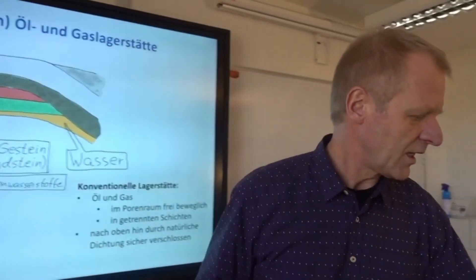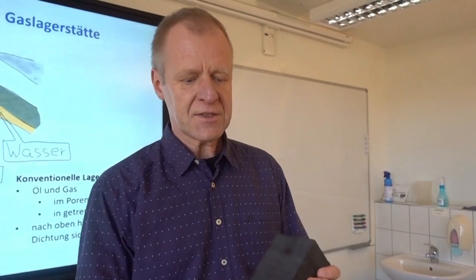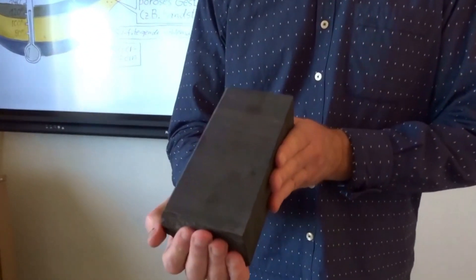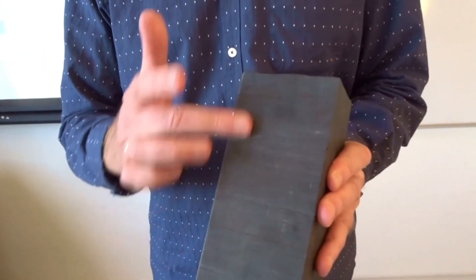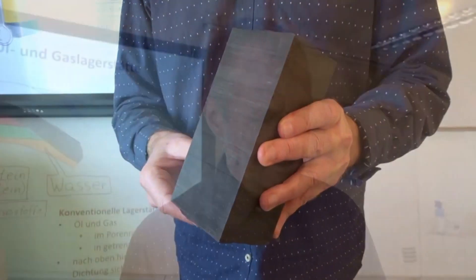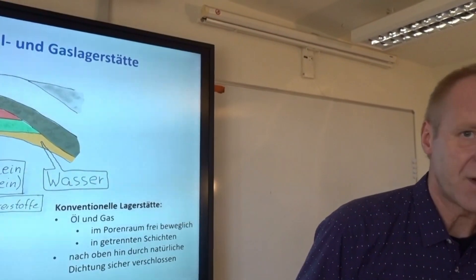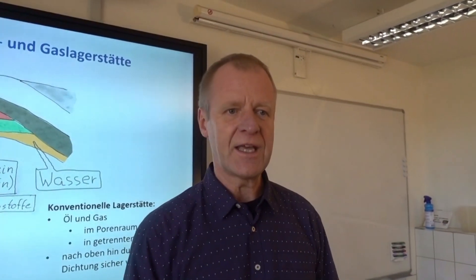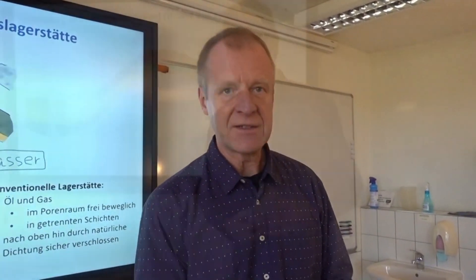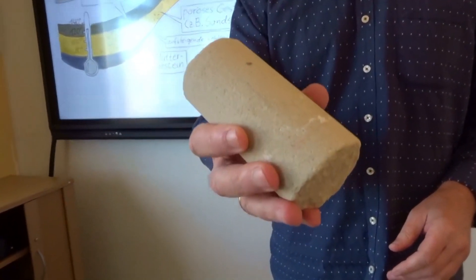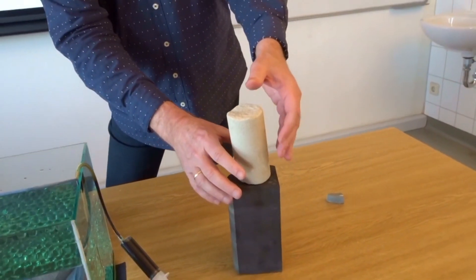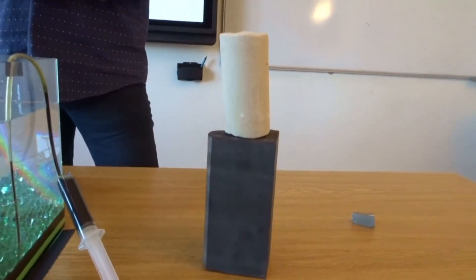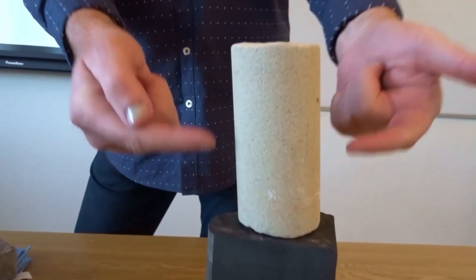Oil and gas are formed from organic material, which is accumulated over long periods of time — for example, dead plankton, which sediments in the deep sea on the seabed. Here on this rock you can see the stratification of the rock. This rock remains for a few million years down in the earth and is overlaid by sediments. Sediments are, for example, sands that are deposited over the organic material, and these sands are porous, and in the pores of the rock there's usually water in them.